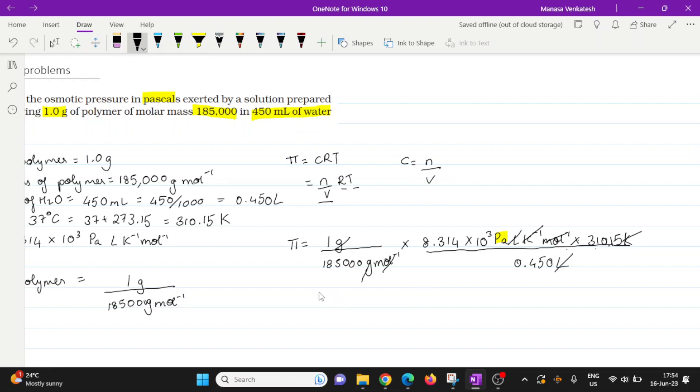So when we simplify the numerator, we are going to get 2578.587 times 10 to the power 3 pascal whole divided by 83,250.